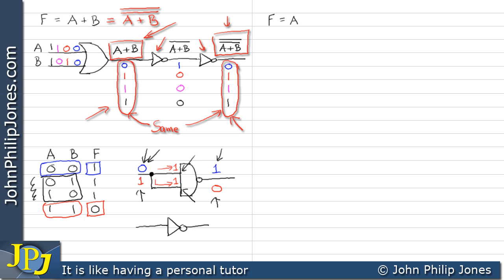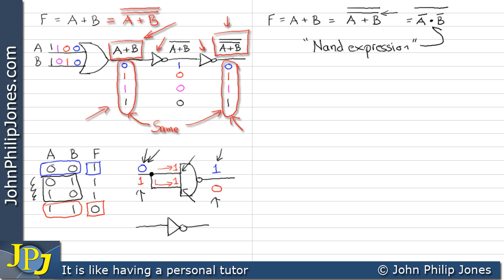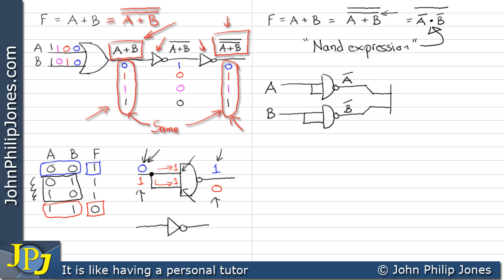Consider the Boolean expression F = A or B. We double-not it so it doesn't affect its functionality. Then we apply De Morgan's theorem to the inner part: change A to not-A, change OR to AND, and B to not-B, while maintaining the outer NOT. This gives us a NAND expression containing no ORs. If I pass A through a NAND gate with its inputs coupled I get not-A at the output, and similarly passing B through gives not-B.